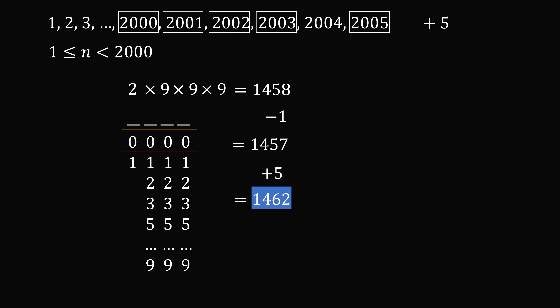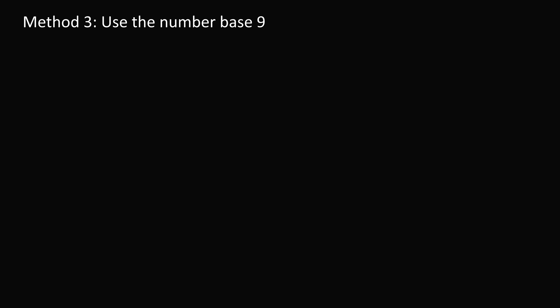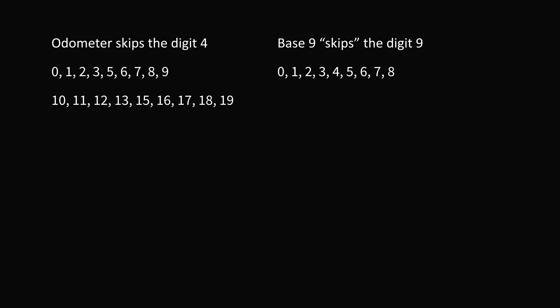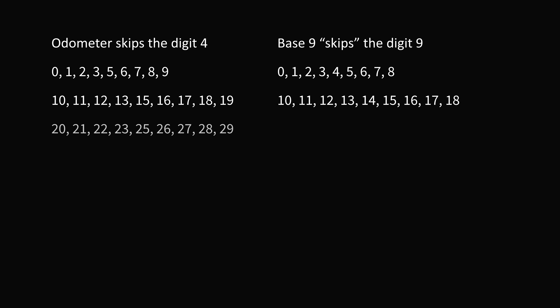As if this method wasn't easy enough, here's one more genius method: use base 9. The odometer always skips the digit 4, so it uses the digits 0, 1, 2, 3, 5, 6, 7, 8, 9. When counting in base 9, you always skip the digit 9. There's a correspondence between the miles the odometer shows and base 9 — the odometer skips 14, and similarly base 9 skips 19. So we can count odometer numbers as if counting in base 9.